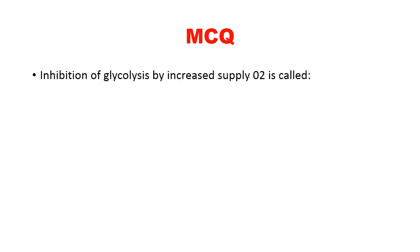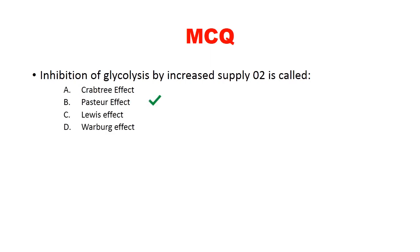Inhibition of glycolysis by increased supply of oxygen is called the Pasteur effect. The Warburg effect is seen in malignant cells, where despite adequate oxygen, they depend on anaerobic glycolysis.